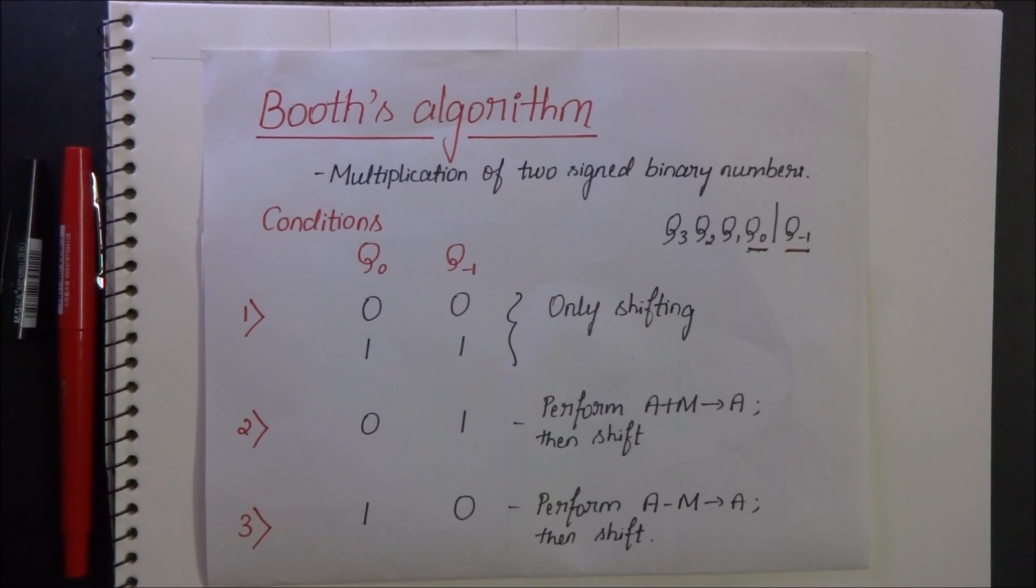Booth's algorithm is used for the multiplication of two signed binary numbers. There are few conditions that we have to keep in mind before starting off with the steps.